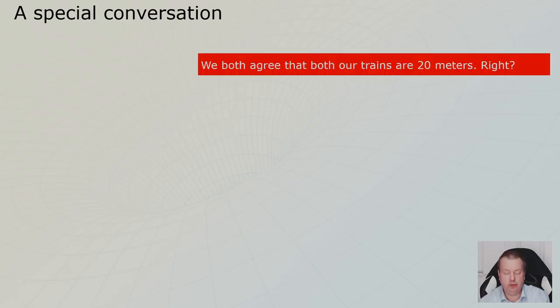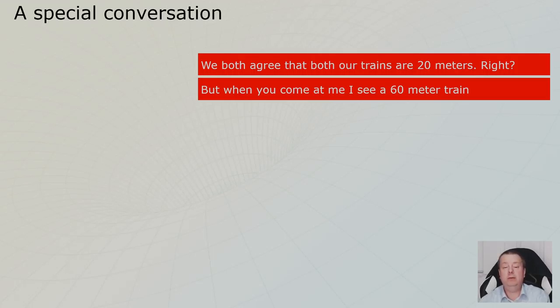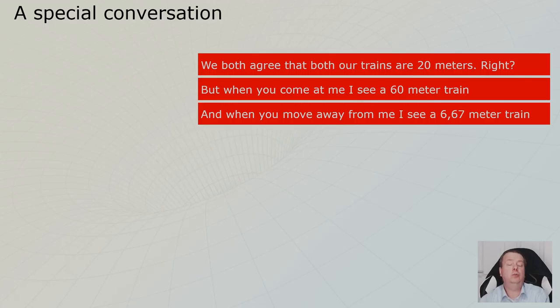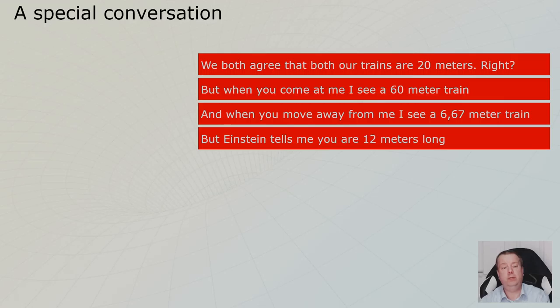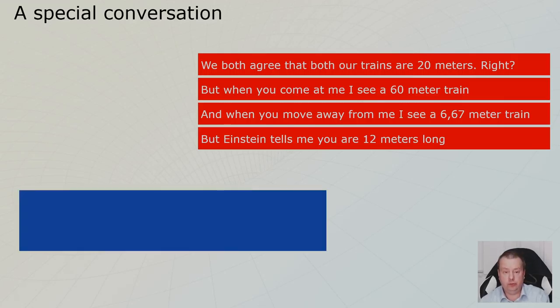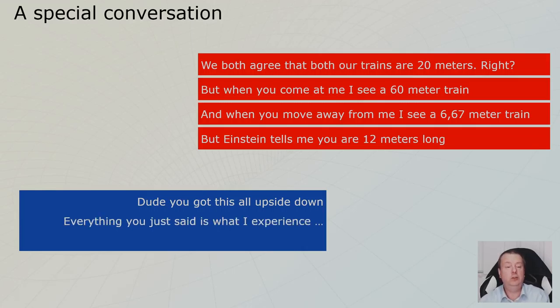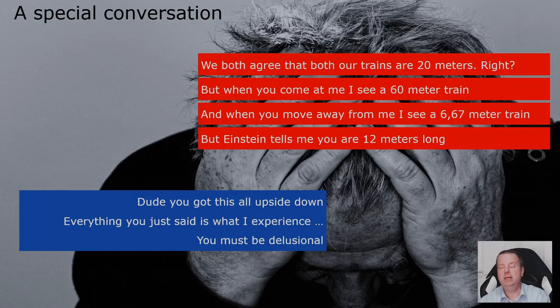That's what's happening. So we get this special conversation where the observer tells the person in the train, we agree that it was 20. Yes, we were there. But I saw you coming at me in a train at 60 meters. I saw you leaving in a train, 6.666. And Einstein tells me it's 12. And then the person on the train might say the exact same thing. This is what I saw. You must be delusional. So it's really, really crazy, this stuff. It will give you a headache. Let go of your intuition. Let's follow the math.